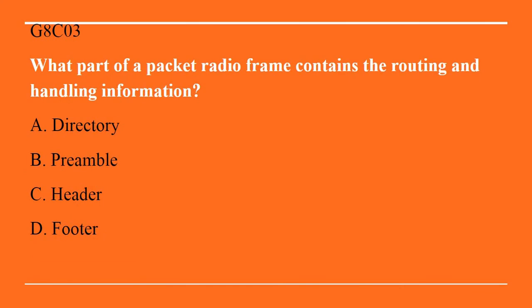G8C03: Which part of a packet radio frame contains the routing and handling information? A. Directory. B. Preamble. C. Header. Or D. Footer. The correct answer is C, header.